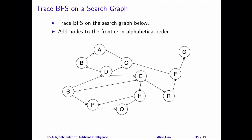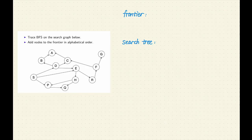Hello everyone, this is Alice Gal. In this video, I'm going to trace breadth-first search on a search graph. This is the search graph. I'm going to add nodes to the frontier in alphabetical order. During this process, I will keep track of the frontier and the search tree. Let's get started. Let's add the initial state S to the frontier and to the search tree.